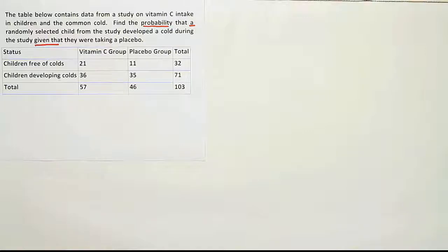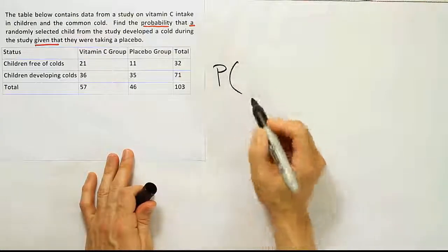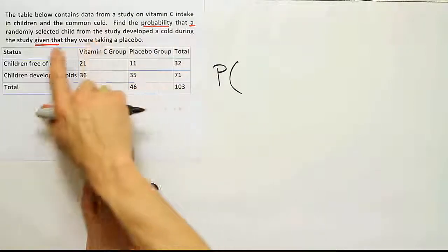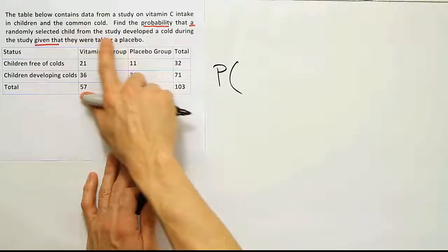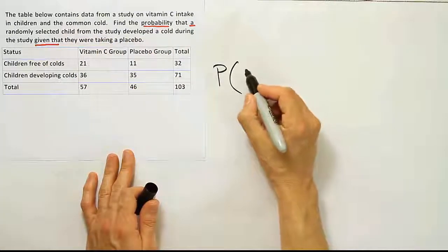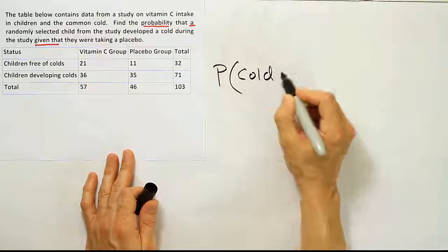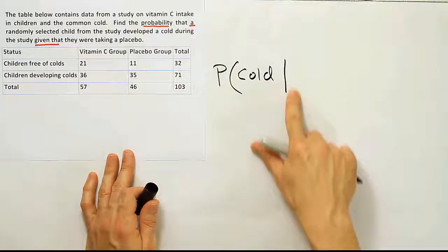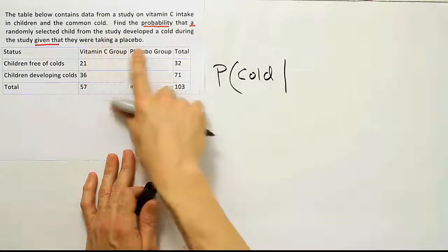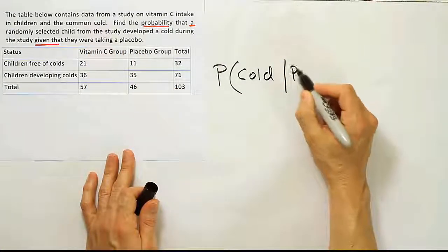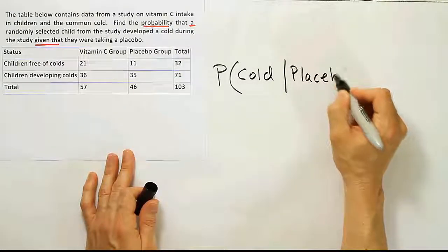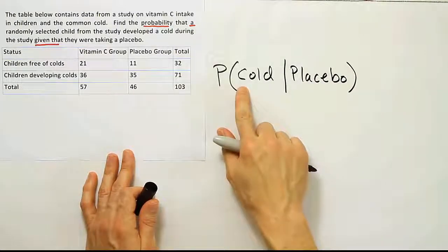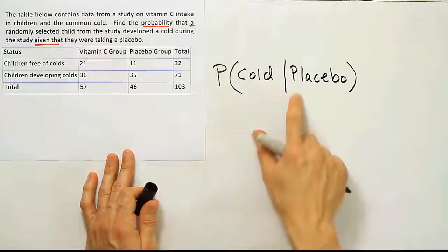So conditional probability has the formula, probability of, and then we put the first thing, so probability that a child from the study developed a cold, so probability of a cold, given that, so given that is represented by the straight up and down bar, that they were taking a placebo, so placebo. Alright, so probability of getting a cold, given that they're taking the placebo.